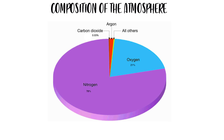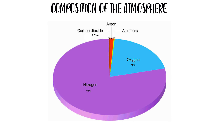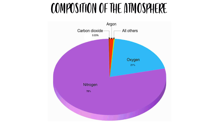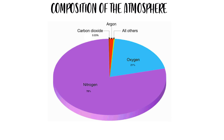Nitrogen isn't good for us per se, but it isn't harmful either. It just enters our lungs and stays there without entering the bloodstream until we exhale it. The oxygen, on the other hand, is absorbed into our bloodstream and helps keep us alive. The remaining 1% is composed of various gases, with the most abundant being argon. There are also dozens of other gases, but most notably carbon dioxide, also known as CO2, which makes up 0.032% of the atmosphere.